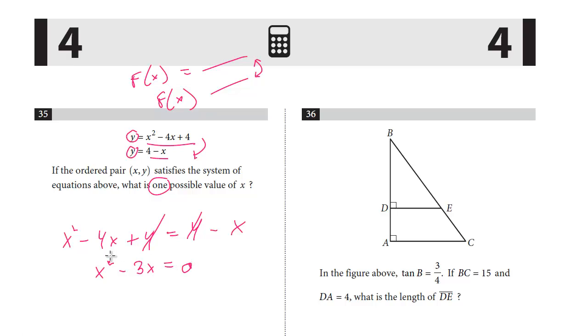And then you're going to get x squared minus 3x equals 0. And this will give you one answer. What works here to make this 0? Well, it would have to be 0. x would have to be 0. And that's an answer choice. So if x is 0, that's one choice. You could just stop there.